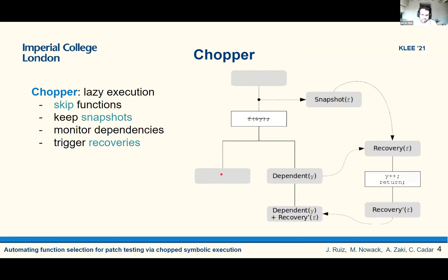If you do not reach any point where there is a dependency to the data modified by f, then you are happy because essentially you sliced away part of the code, thereby alleviating some of the path explosion problem. On the other side, if you meet a dependency — for example, a read on y which is modified by f — then you have to trigger a recovery to keep the analysis sound. You take the state from the snapshot, recover the function, especially the parts that modify y, execute y++ and return with this recovery data incorporated in the dependent state. This way, we can continue the symbolic execution and the analysis is sound.